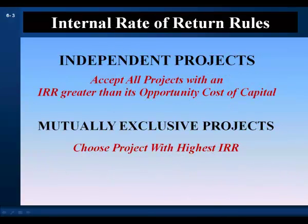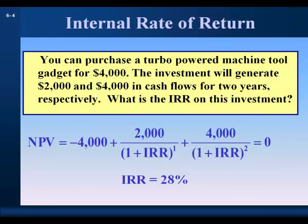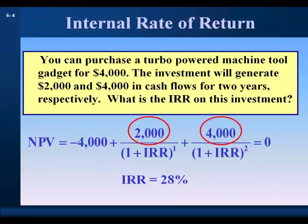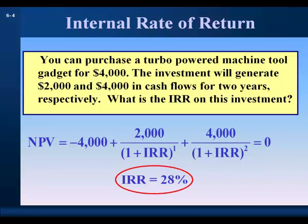The Internal Rate of Return Decision Rules: When evaluating independent projects for an accept-reject decision, the IRR rule is to accept all projects with an IRR greater than the opportunity cost of capital. When evaluating mutually exclusive projects, rank them by IRR and choose the project with the highest internal rate of return. For example: you can purchase a turbo-powered machine tool gadget for $4,000. The investment generates $2,000 and $4,000 in cash flows for the next two years, respectively. The IRR is that discount rate that makes NPV equal zero — and that discount rate is 28%, the project's internal rate of return.